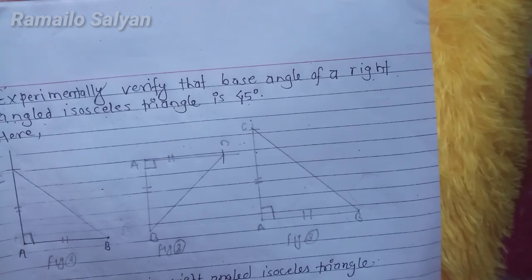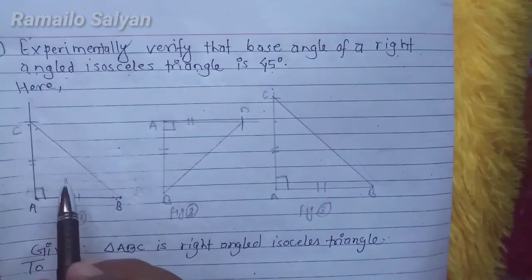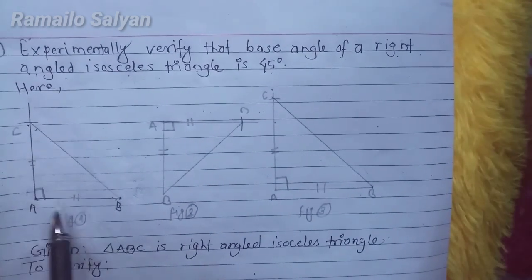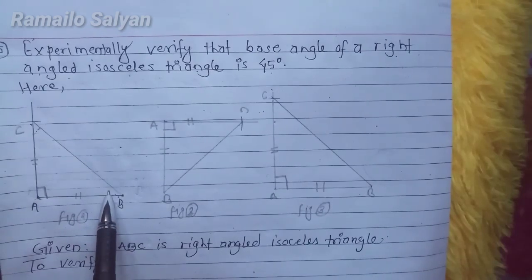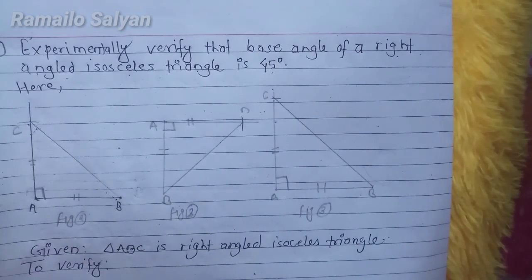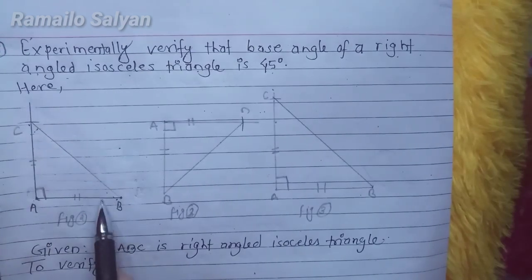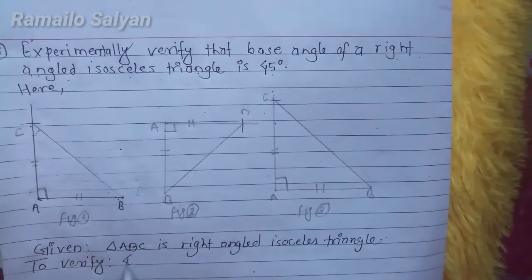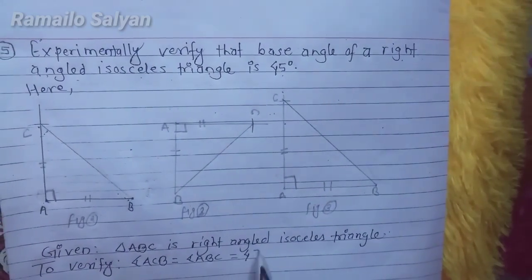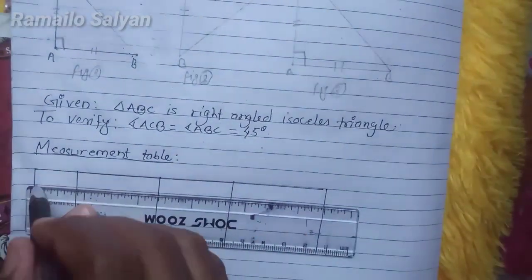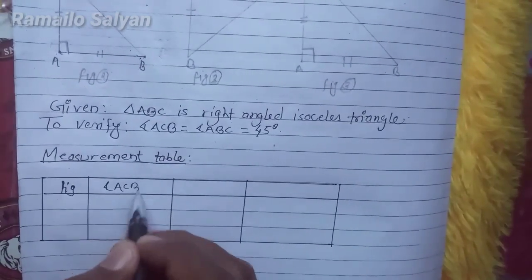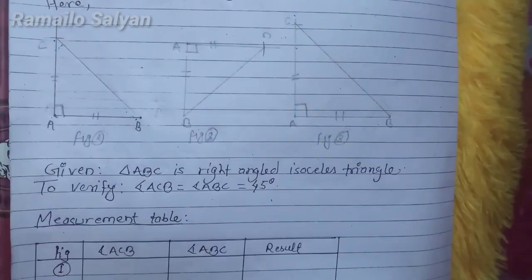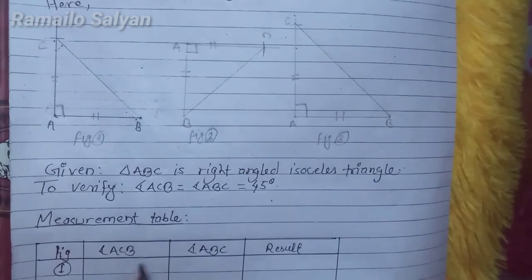To verify that the base angles of a right angle isosceles triangle are 45 degrees: in this figure, AB and AC are equal. Angle C is opposite to side AB, and angle B is opposite to side AC. Angle C and angle B are the base angles. Since B is opposite to the equal sides, these are the base angles. We have to verify that angle C equals angle B equals 45 degrees, i.e., angle ACB equals angle ABC equals 45 degrees. Now measure these angles from each figure using a protractor.